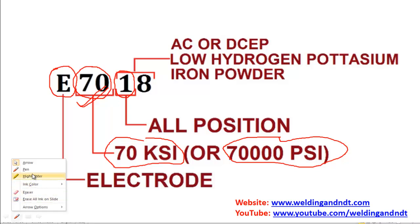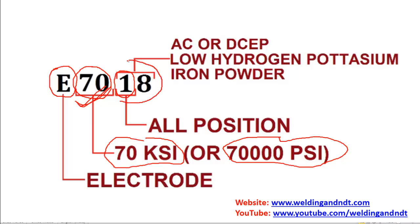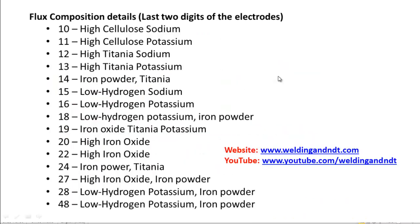So far we have understood what 'E' means, what the first two digits mean, and what the second last digit means. Now the last two digits combined show two things: first is the flux composition, and second is the current or polarity in which that electrode can be used. Here the last two digits are '18', and '18' shows that the flux composition is low hydrogen potassium or iron powder. I have given the detail of the flux composition according to the last two digits.